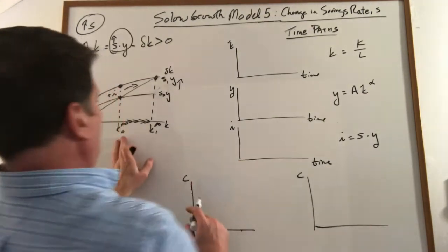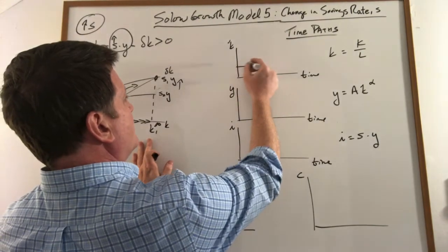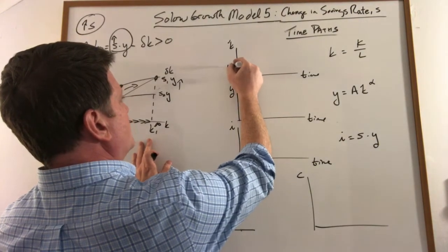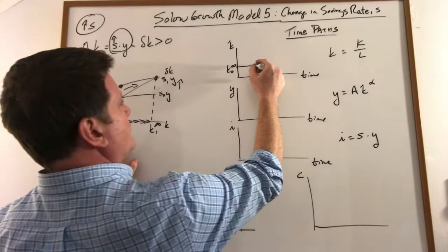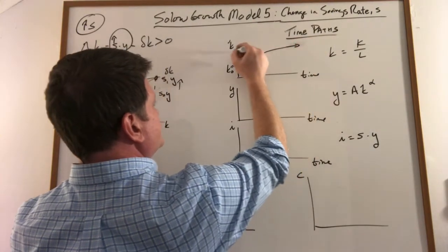That's fine if we want to look at how that happens over time. We would see our capital stock do this. We would start at this steady state and we would slowly rise to this new steady state.